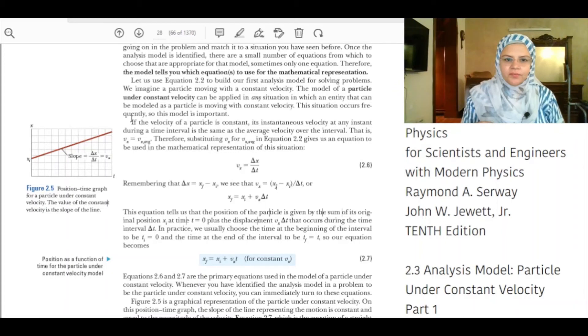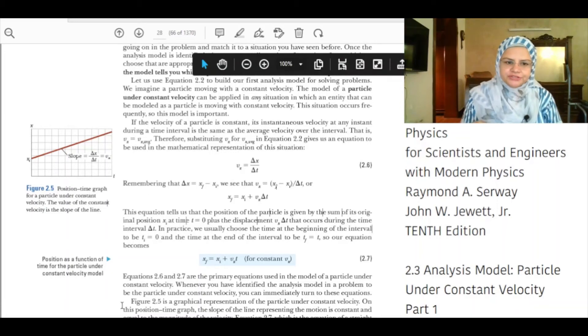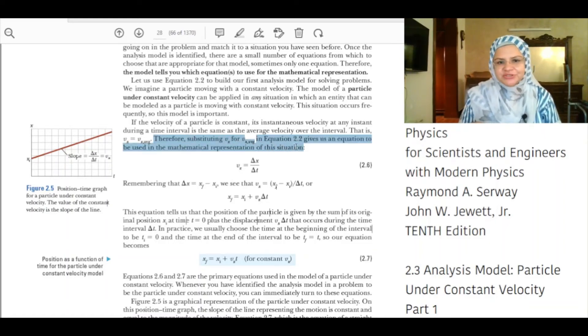If the velocity of a particle is constant, its instantaneous velocity at any instant during the time interval is the same as the average velocity over the interval. That is, Vx is equal to Vx average. Therefore, substituting Vx for Vx average in equation 2.2 gives us an equation to be used in the mathematical representation of the situation.